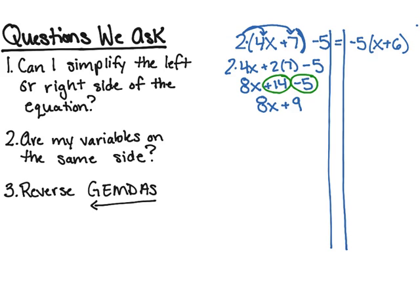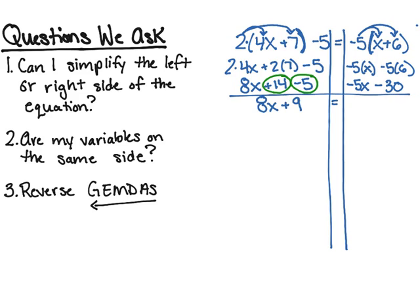Now I have to look at the right side. The right side reads -5(x + 6). Because the negative 5 is touching the parentheses, I know I'm going to have to distribute the negative 5 to each term inside. So that's negative 5 times x and negative 5 times 6. Negative 5 times x gives me negative 5x, and negative 5 times 6 gives me negative 30. I'm going to rewrite this as negative 5x minus 30.